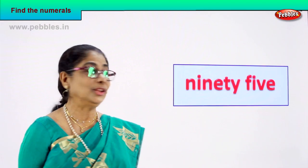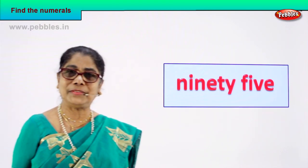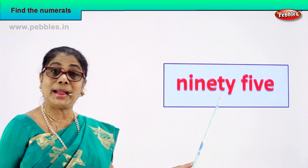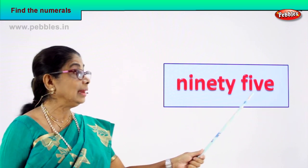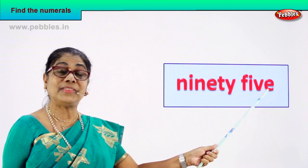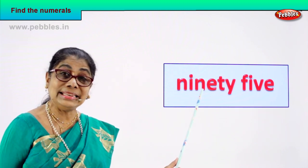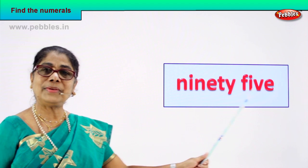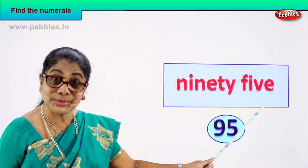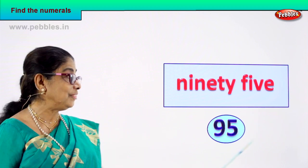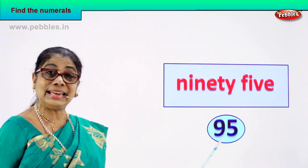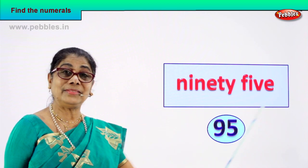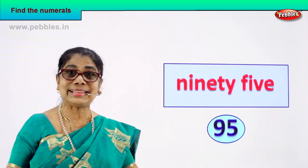Let's look at the first number name and find the numeral. Look, spell and say: N-I-N-E-T-Y, 90, F-I-V-E, 5 — how do we read this? 95. So what will be the numeral? 95 is written as 9 and 5, 95. Excellent! You read this as 95.